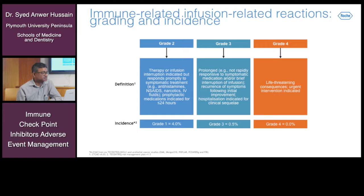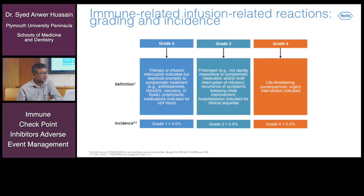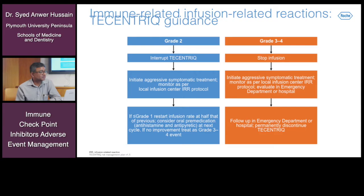For Tecentriq-specific guidelines: grade 2 infusion reactions warrant infusion interruption, and patients usually respond promptly to symptomatic treatment such as antihistamines, NSAIDs, and intravenous fluids. Prophylactic medications are indicated for less than 24 hours. Grade 3 toxicity is defined by prolonged reactions not rapidly responding to symptomatic medications, recurrence of symptoms following initial improvement, or need for hospitalization. Grade 4 represents life-threatening consequences requiring urgent intervention.